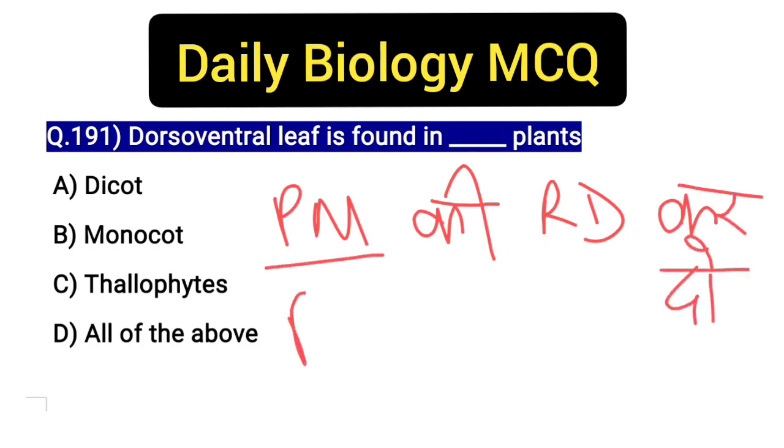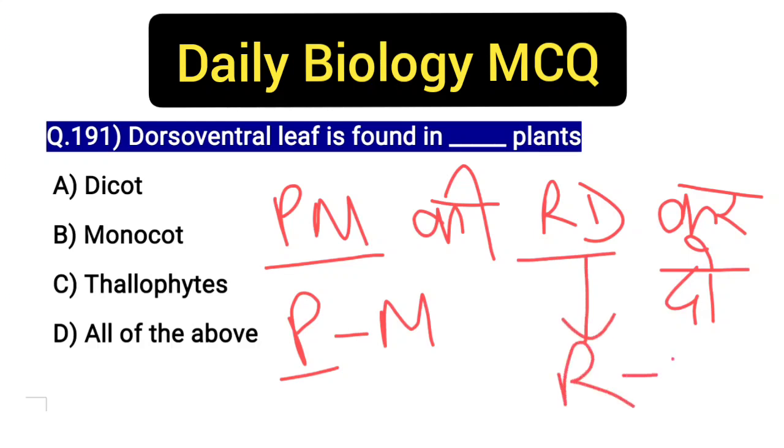Here is a trick to remember venation: PM — Parallel venation in Monocot; RD — Reticulate venation in Dicot.